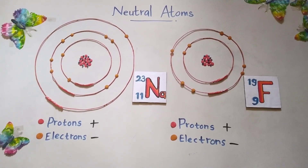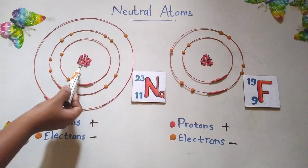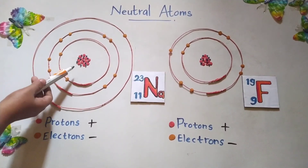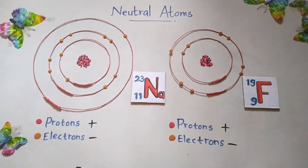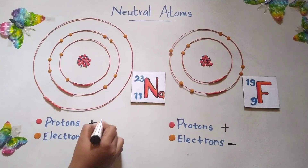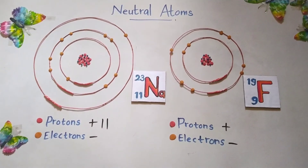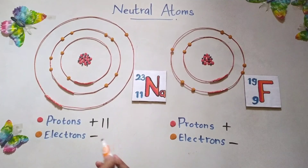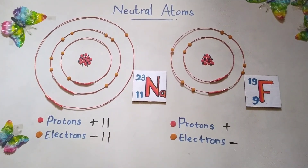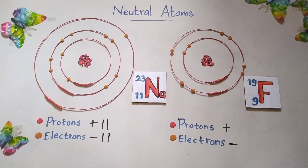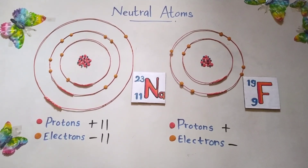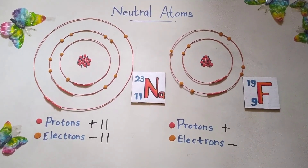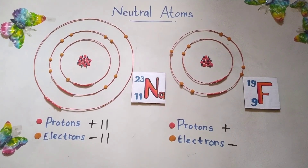Let's first take this sodium atom. If you look at this one, in the nucleus there are positively charged protons. If you count that value, that will be 11. So the positive level is 11. Then if you calculate the number of electrons, that will also be 11. That means, as this is an electrically neutral atom, there are protons with an equal number of electrons.